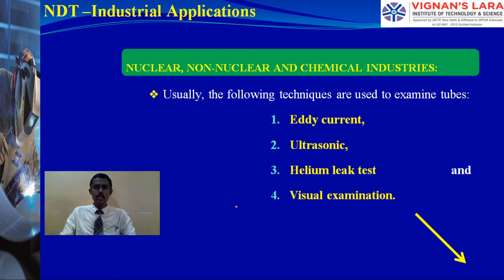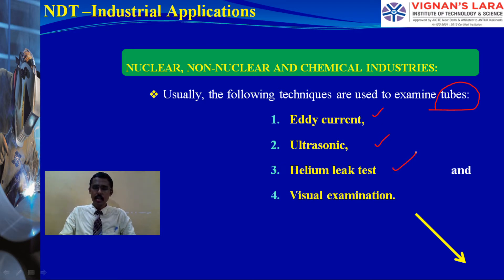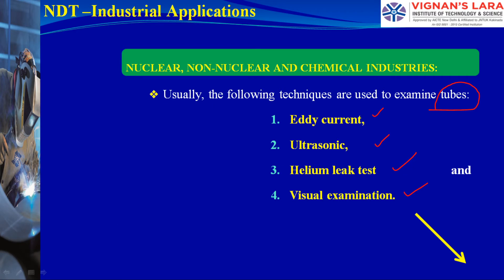The following techniques are used to examine tubes in heat exchangers and pressure vessels: eddy current, ultrasonic, helium leak testing, and visual examination — any of these can be used to identify and rectify defects.